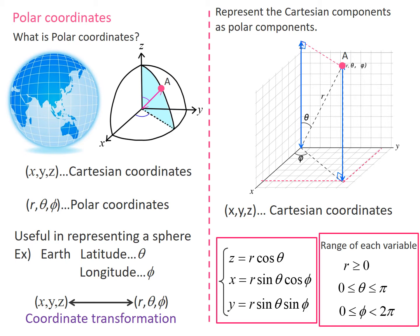Now I explain polar coordinates. Until high school, you mainly used x, y, and z axes which are orthogonal to each other. This is called a Cartesian coordinate system.